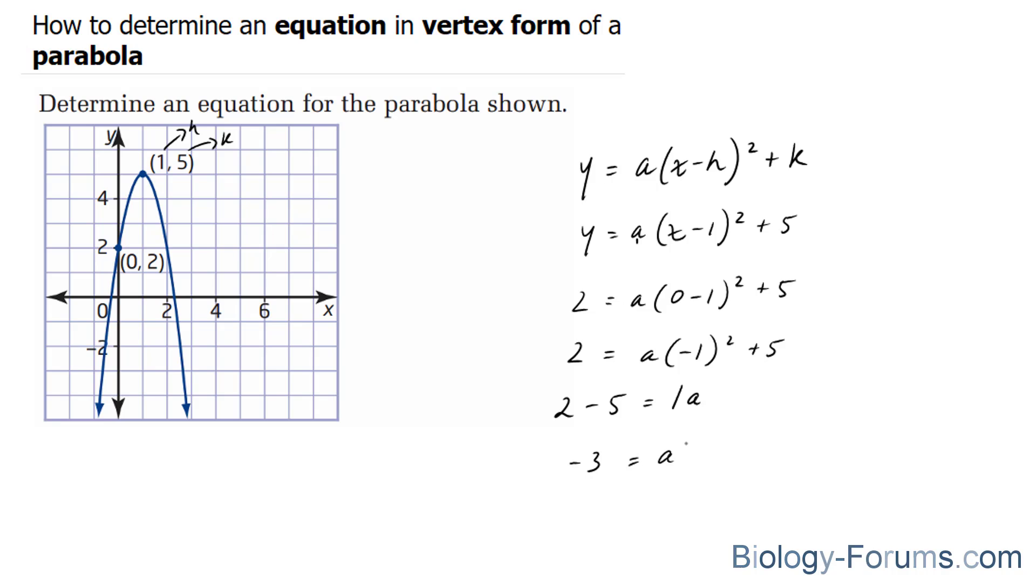And therefore, our a value is equal to -3. So now that we've found our a value, we can substitute this back into our growing equation. We stopped right there. So we end up with, and our final answer will be written right here: y is equal to -3(x - 1)² + 5, just as we suspected a would be negative.